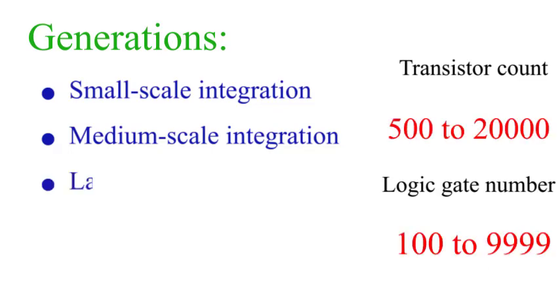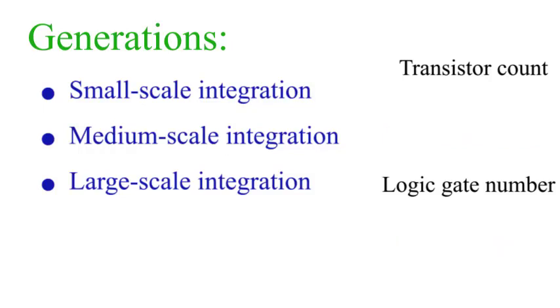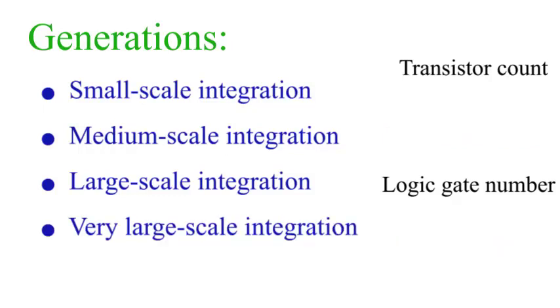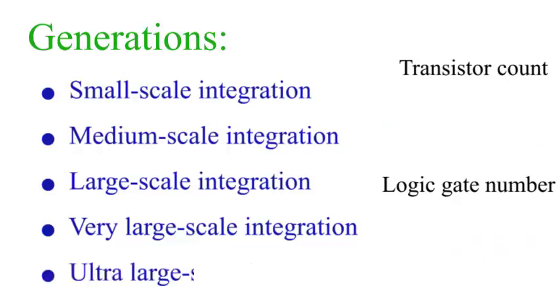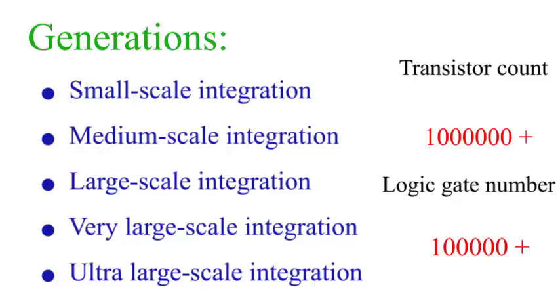Large scale integration ICs have transistor count 500 to 20,000 and logic gate number 100 to 9,999. Very large scale integration ICs, VLSI, have transistor count 20,000 to 1,000,000 and logic gate number 10,000 to 99,999. Ultra large scale integration ICs have transistor count 1,000,000 plus and logic gate number 100,000 plus.